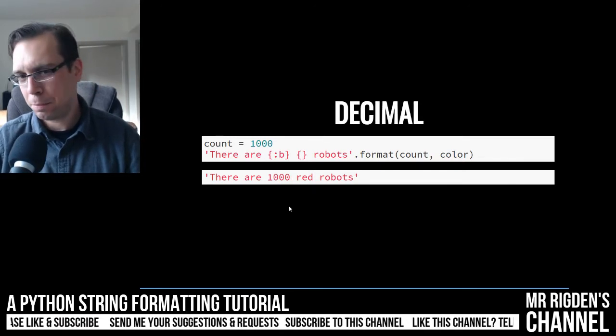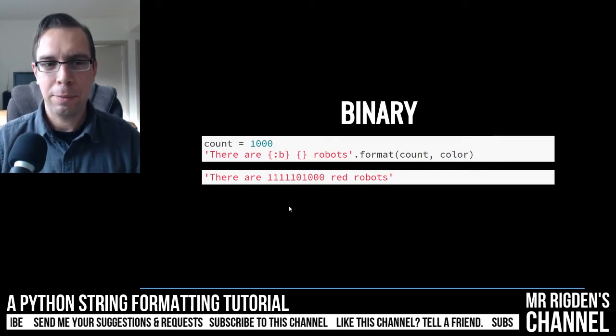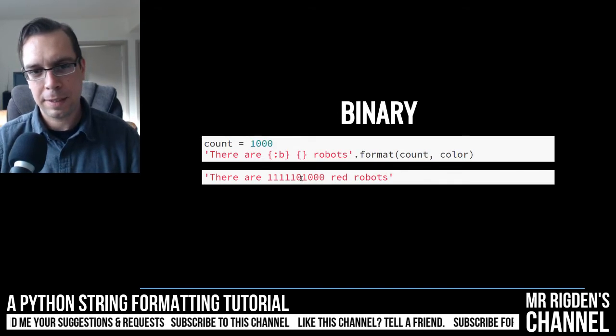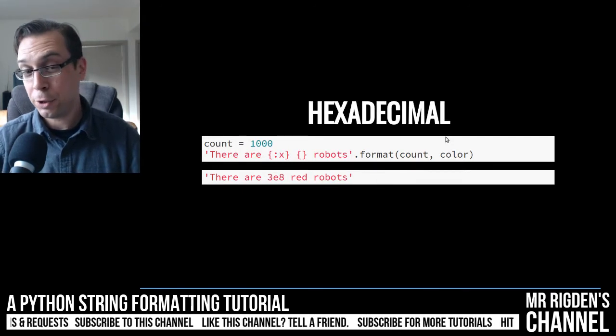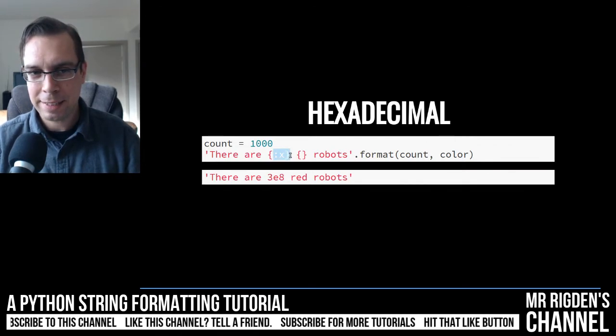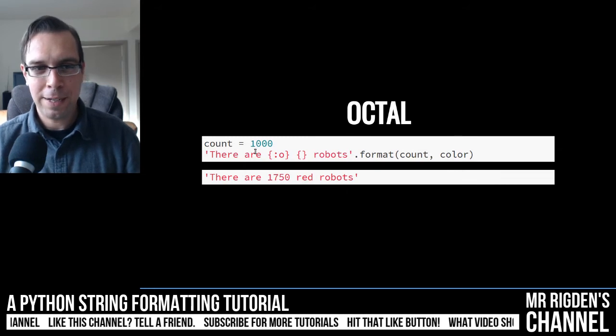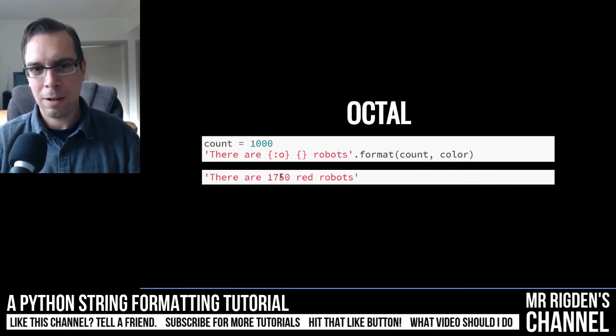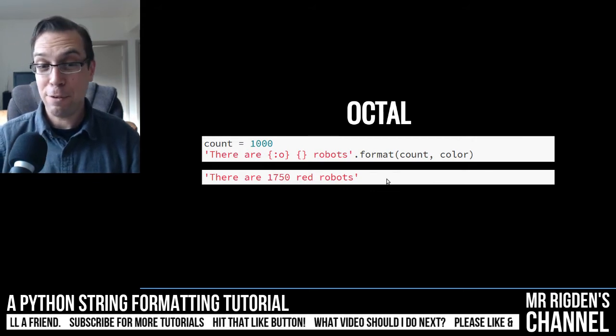I'm going to show decimal numbers, which is basically we've been working with. We can also do binary. So here we go. We've got a count of a thousand. Here is a thousand in binary. If you want to specify that. This will show hexadecimal. A little X there. Makes it hexadecimal. Octal too. We can do 1000 in octal. So there are seven in 50 red robots.